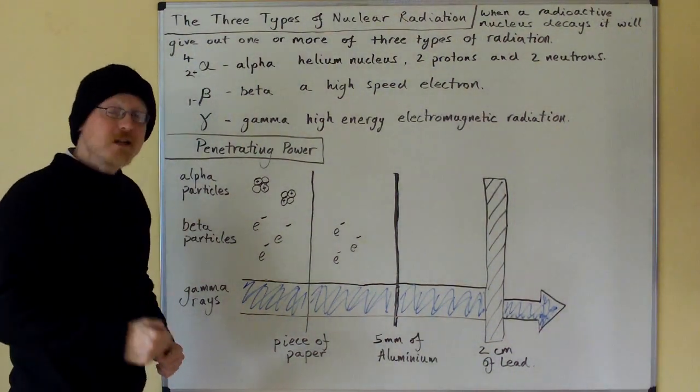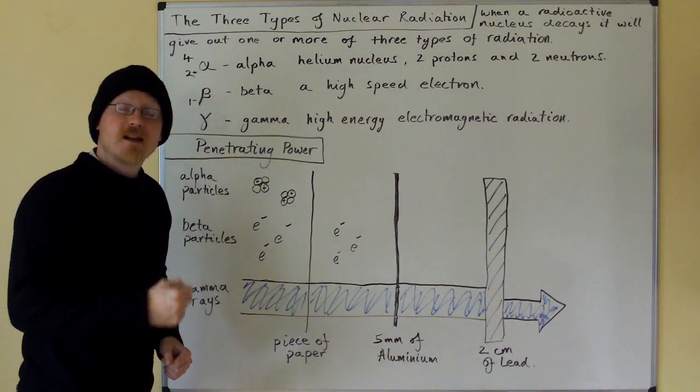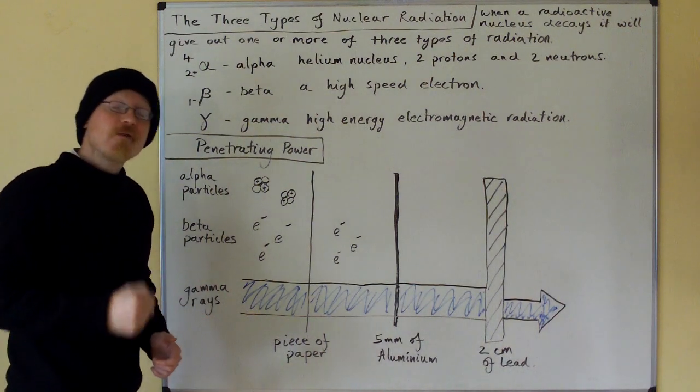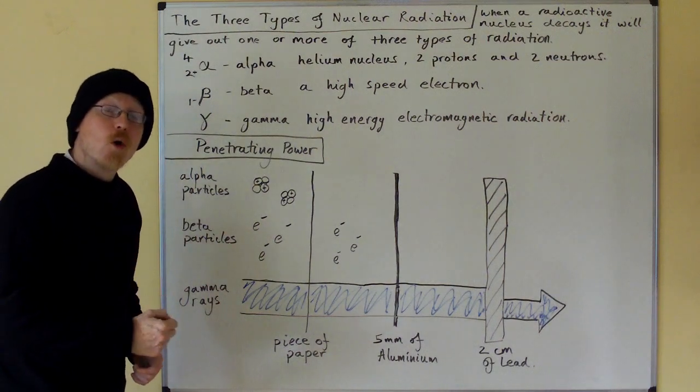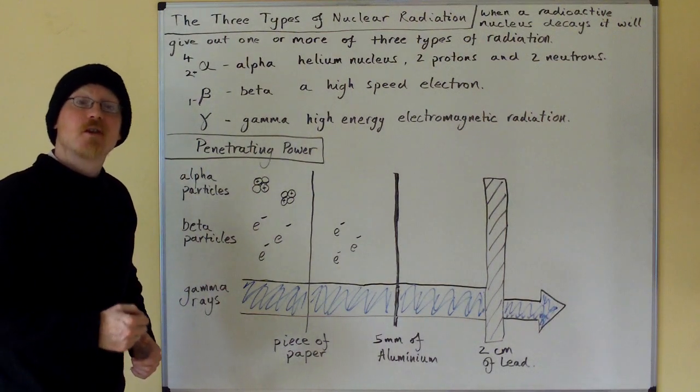Hi. The three types of nuclear radiation. When a radioactive nucleus decays, it will give out one or more of three types of radiation.